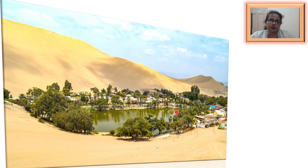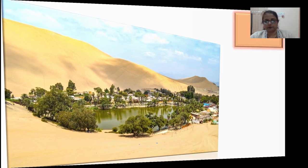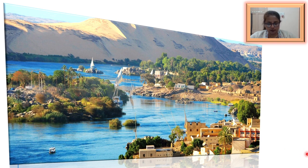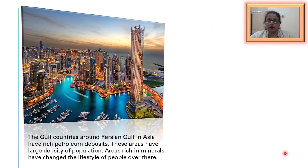Here you can see an oasis amidst the sandy desert where a lot of greenery can be seen along with settlements. The Nile Valley is densely populated due to fertile silt deposited by the Nile River; irrigation is also practised because of the availability of water throughout the year, and people there continue with agriculture as their main occupation. The Gulf countries around the Persian Gulf in Asia have rich petroleum deposits, and these areas have a large population density, with mineral wealth having changed the lifestyle of people there.